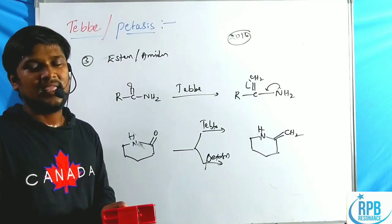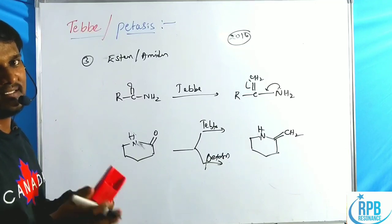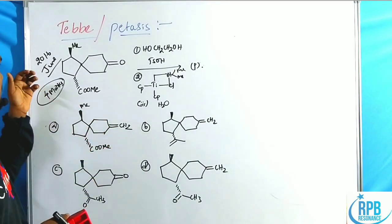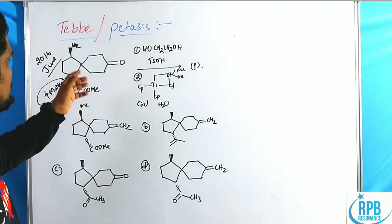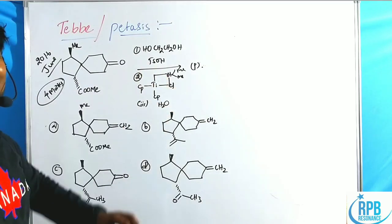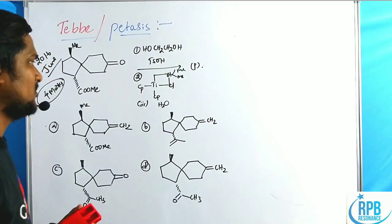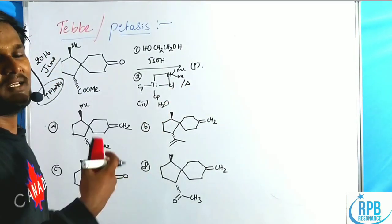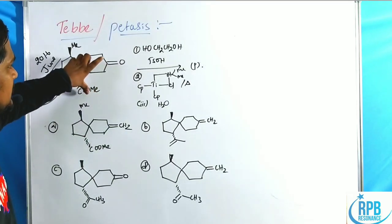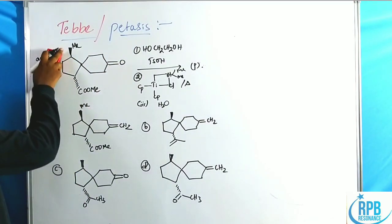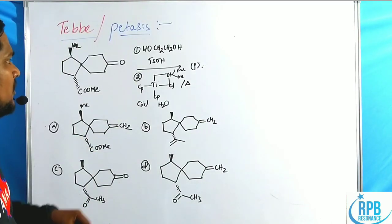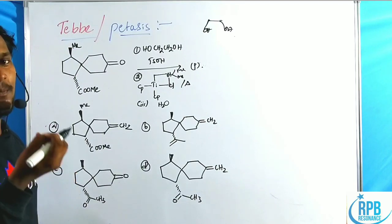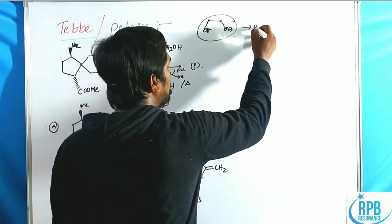We will now discuss a CSIR 2016 June four-marker problem. The question presents a titanium–aluminum complex, which we recognize as a Tebbe reagent. The reactant contains both a carbonyl functionality and an ester functionality. In the first step, a glycol protecting group is used to protect the carbonyl compound.